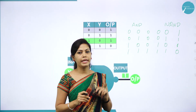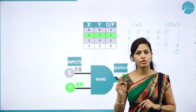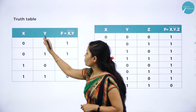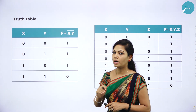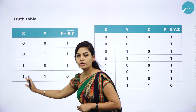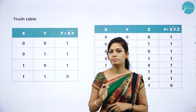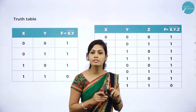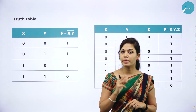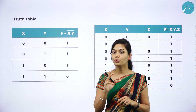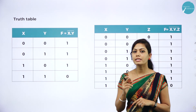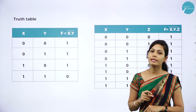This is called NAND gate. Today we have studied three basic gates — NOT gate, AND gate, OR gate — and two derived gates — NOR gate and NAND gate. For NAND: truth table for two variables is X · Y whole bar, and for three variables it is X · Y · Z whole bar. In my next session I will discuss XOR gate, XNOR gate, and universal gates. Thank you.